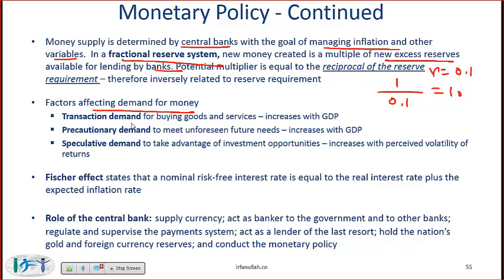The factors affecting demand for money are shown here. Transactional demand is for buying goods and services, so it increases with GDP — this is the money we want for regular transactions; if GDP increases and incomes increase, then the demand for transactional money increases. Precautionary demand is to meet unforeseen future needs, and speculative demand is to take advantage of investment opportunities.